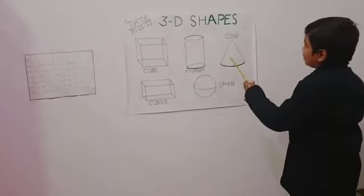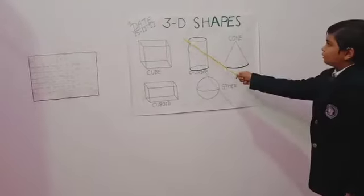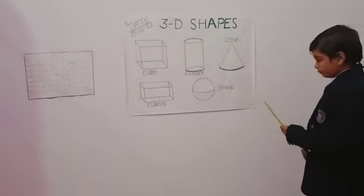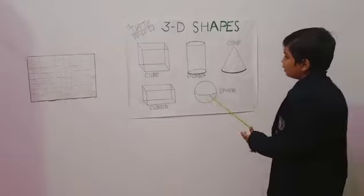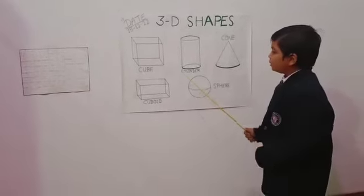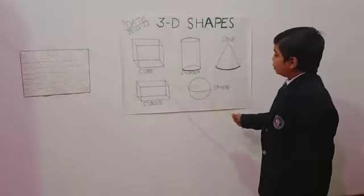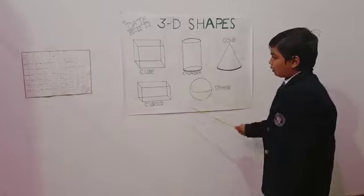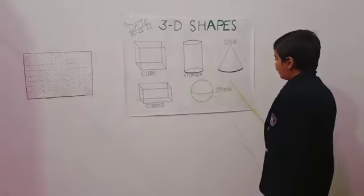Now the topic is 3D shapes. There are 5 3D shapes: cube, cylinder, cone, cuboid, and sphere.